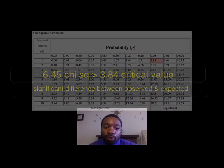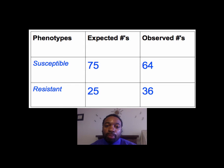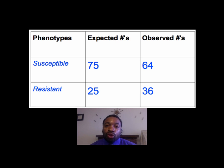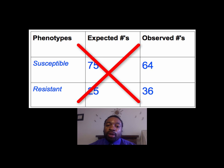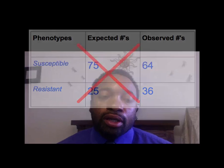Going back to our problem with the susceptible and resistant bed bugs, comparing the expected and observed numbers, the chi-square tells us those numbers are significantly different. We did not get what was expected from the Punnett square of two heterozygous susceptible bed bugs. Hopefully that helps you understand chi-square. Thank you.